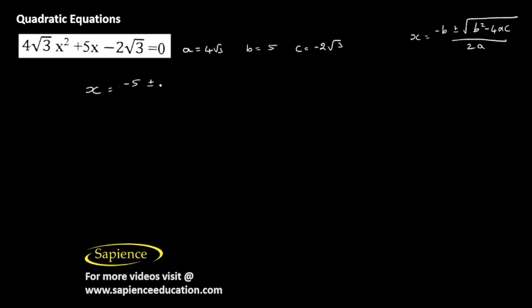Plus or minus square root of b square, that is 5 square, which is 25, minus 4 into a, which is 4 root 3, into c, which is minus 2 root 3, divided by 2a, so 2 into 4 root 3.